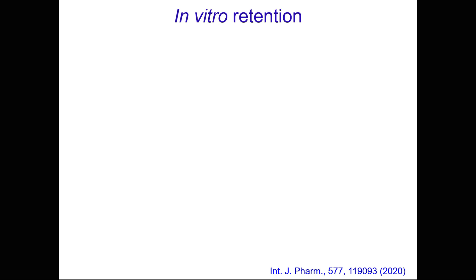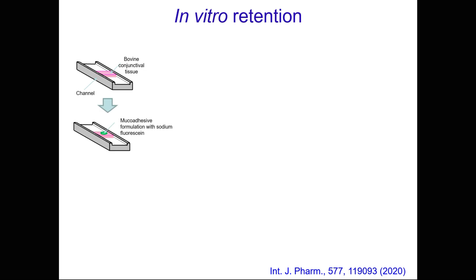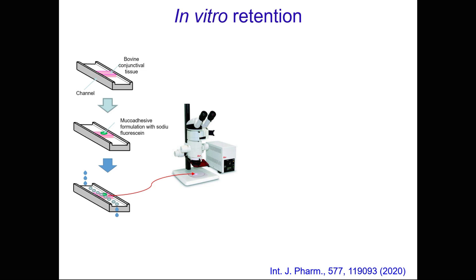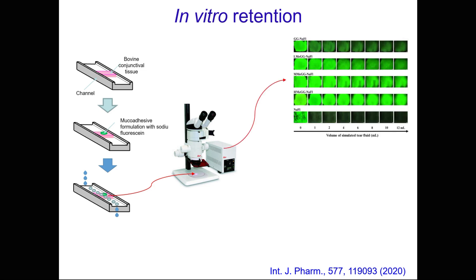In order to test the retention of liquid formulations on mucosal surfaces, we use a special channel and place freshly excised animal mucosal tissue into this channel. For example, for testing the retention of eye drops we use bovine conjunctival tissue. We place our formulation — which is spiked with a special fluorescent dye called sodium fluorescein — on top of this tissue, and then wash this formulation with artificial tear fluid.